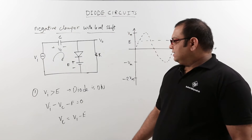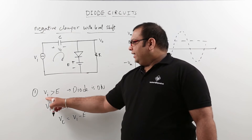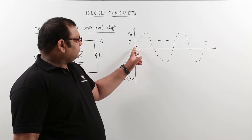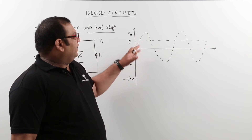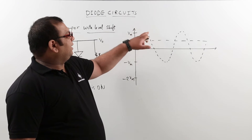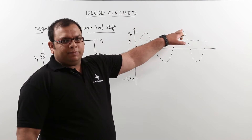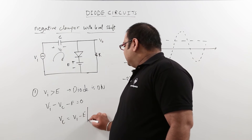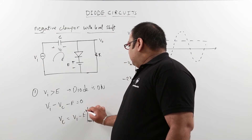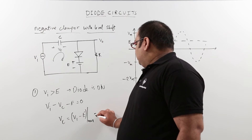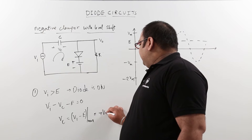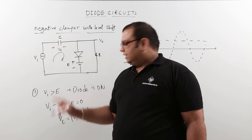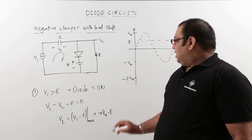When input is greater than E and the waveform reaches its peak value of plus Vm, we take the maximum value. The maximum capacitor voltage will be equal to plus Vm minus E, so this voltage Vc is plus Vm minus E.